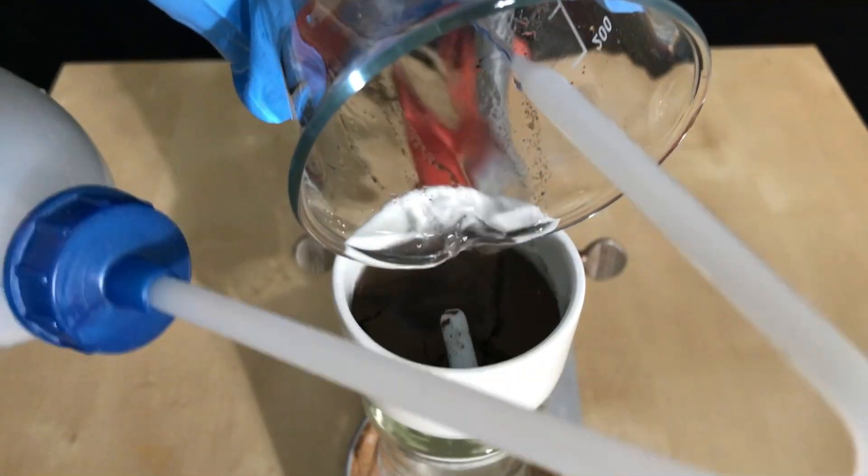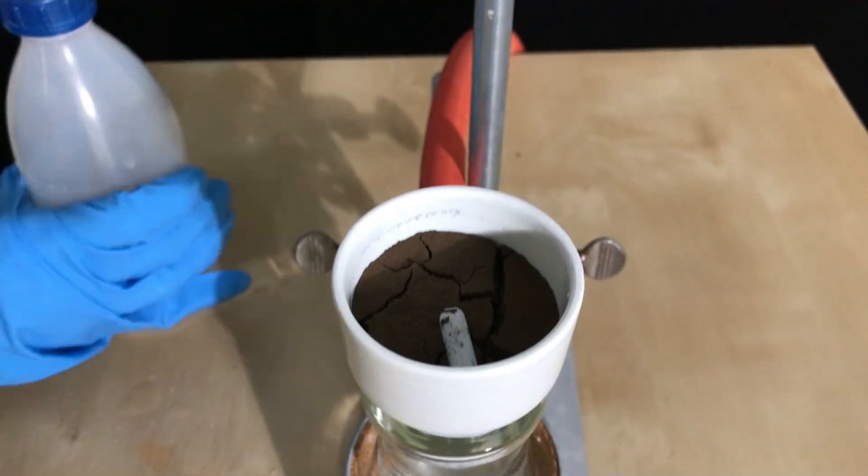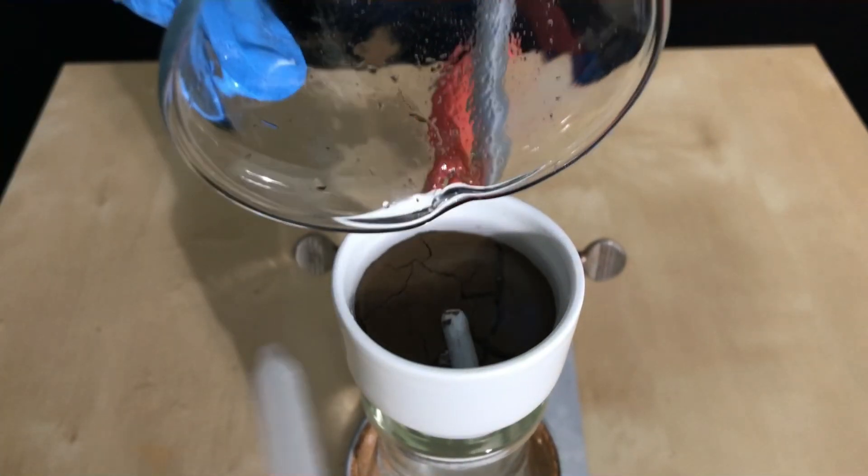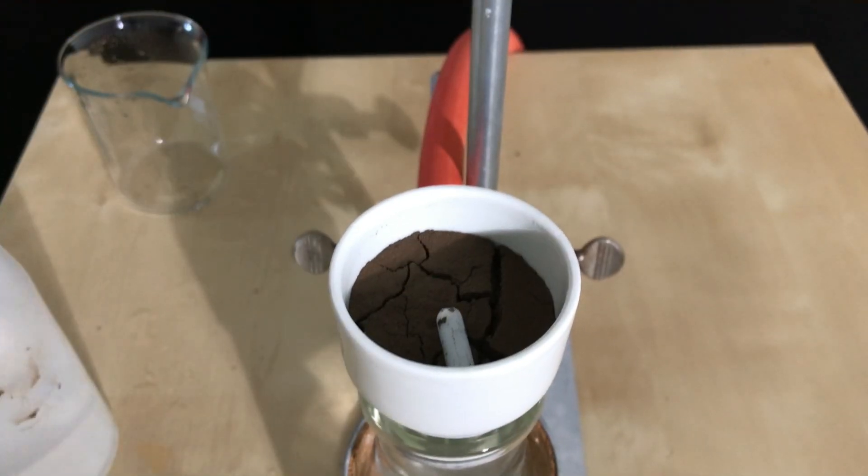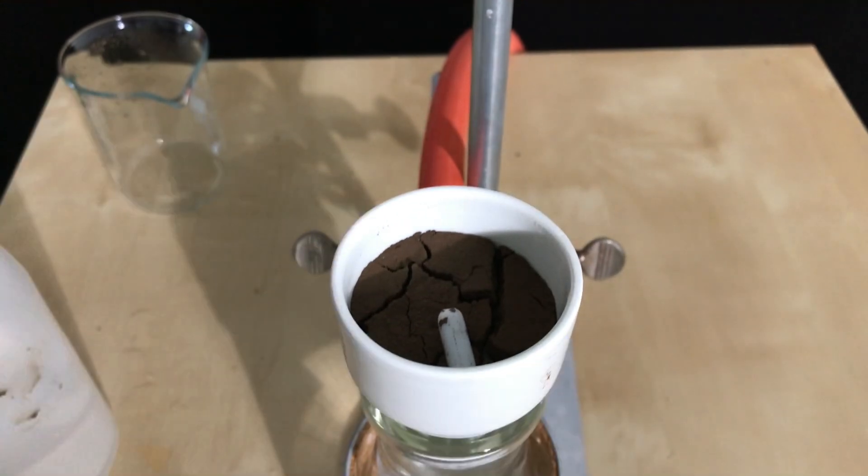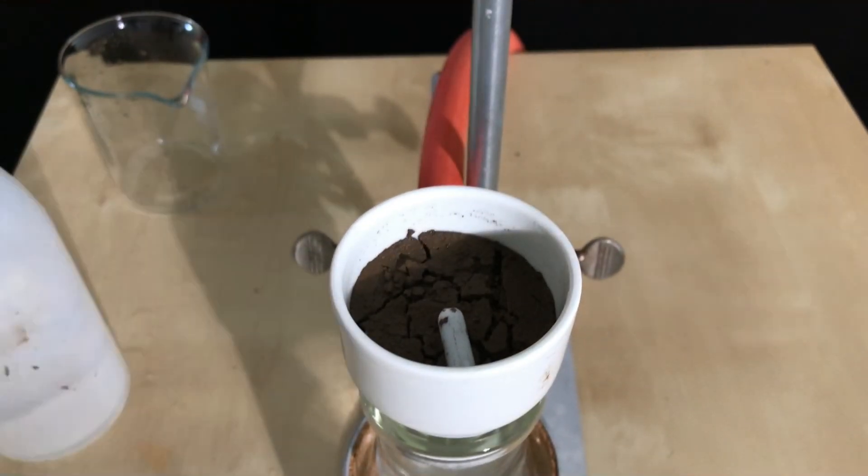Afterwards, the silver oxide suspension was simply put into the filter. Before shutting off the vacuum, even more distilled water was used to rinse the silver oxide. Afterwards, the vacuum was pulled for 2 more minutes to get rid of as much of the water as possible.